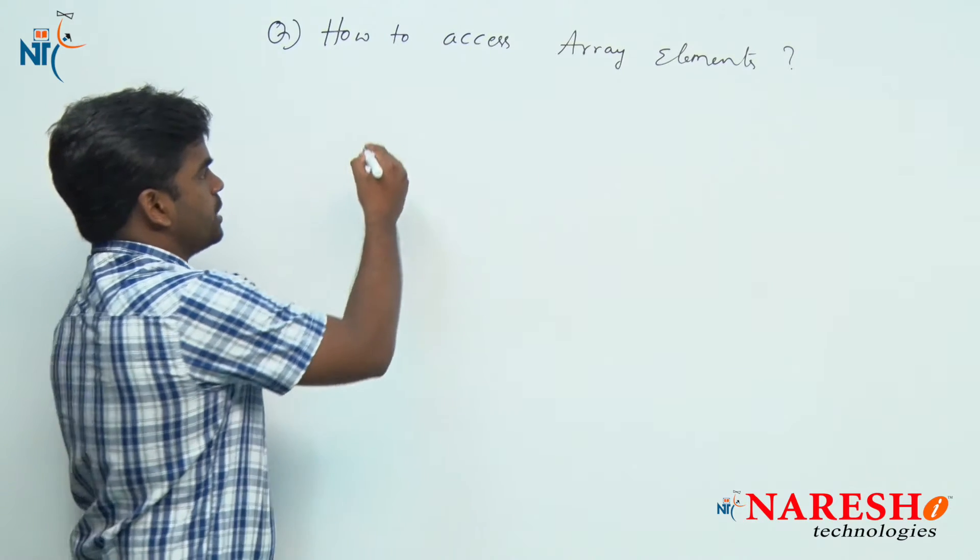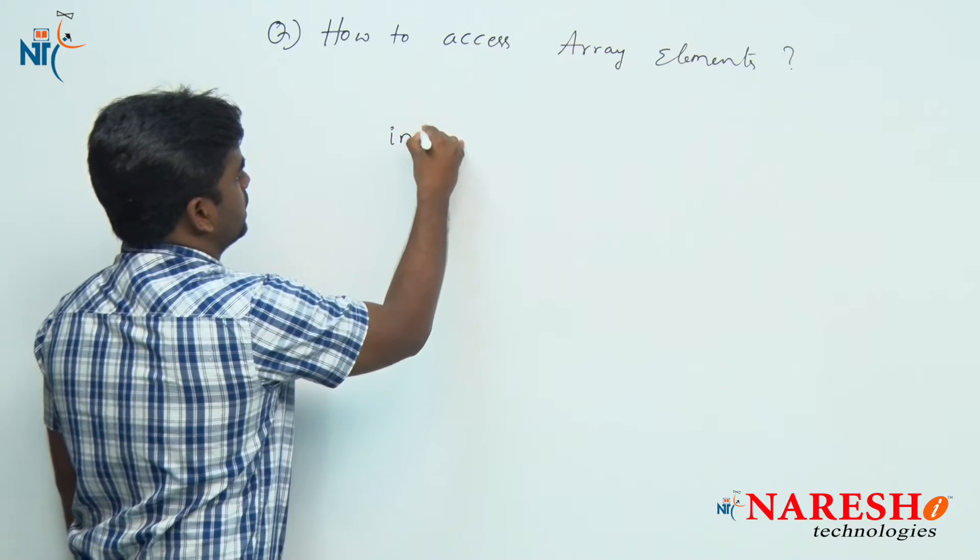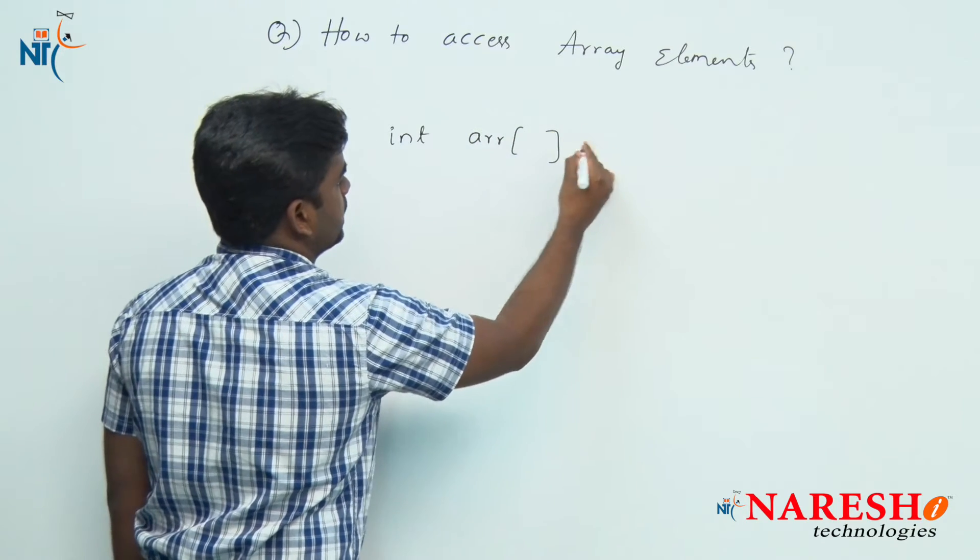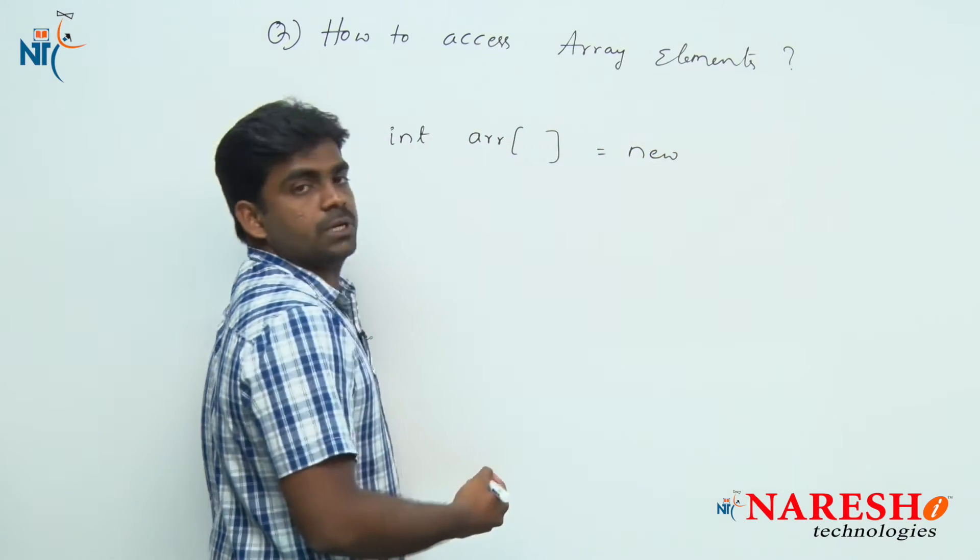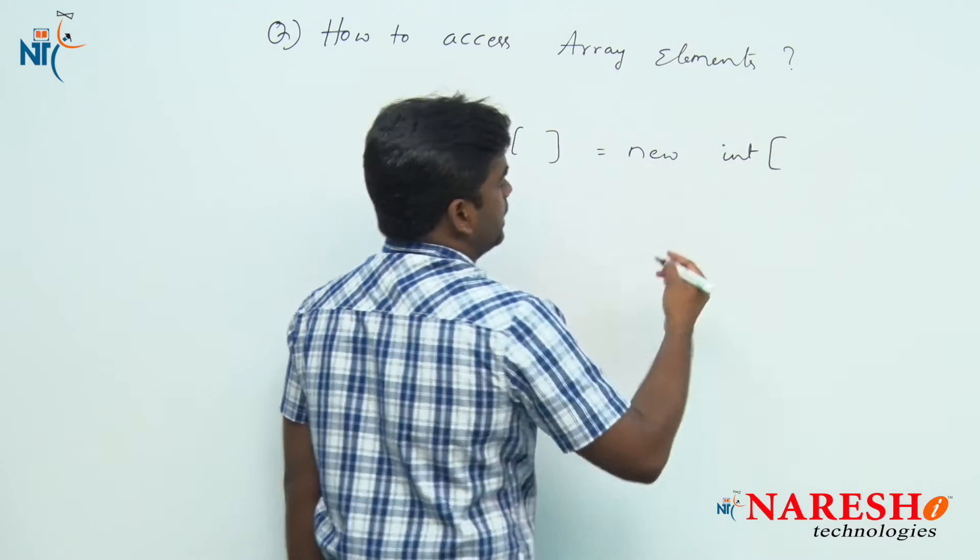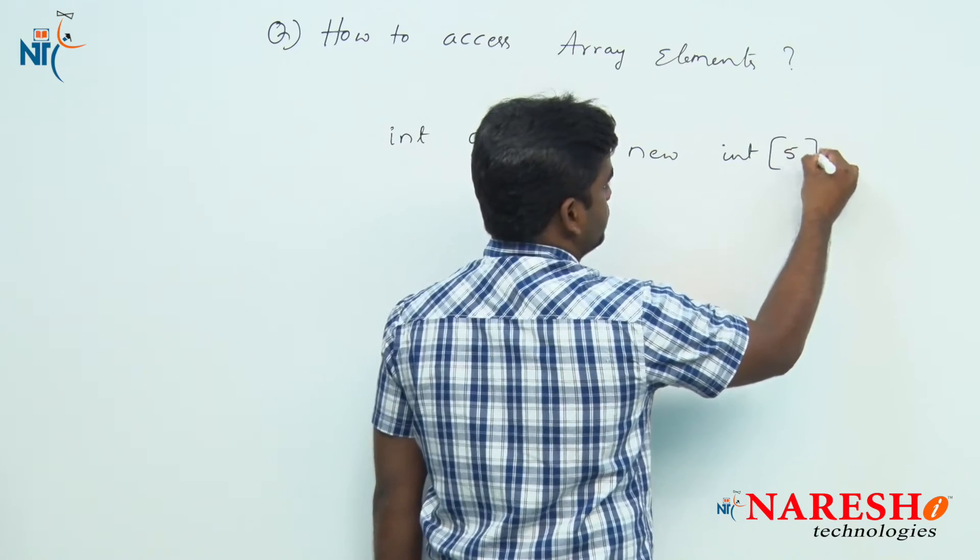Once again we will see. Suppose I want to declare one integer array and store five elements. How to allocate? Here it is new, and here it is integer, and here size we need to specify. Then the memory will be allocated or initialization.